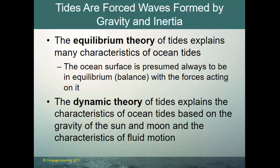The equilibrium theory of tides explains many characteristics of ocean tides — the ocean surface is presumed always to be in equilibrium, in balance with the forces acting upon it. The dynamic theory explains tidal characteristics based on the gravity of the sun and moon, the characteristics of fluid motion, the seabed, and the shape of ocean basins. The dynamic theory takes into account all these subtler aspects, making tide calculations very complex — but once those formulas are solved, we can know the tides for years into the future.